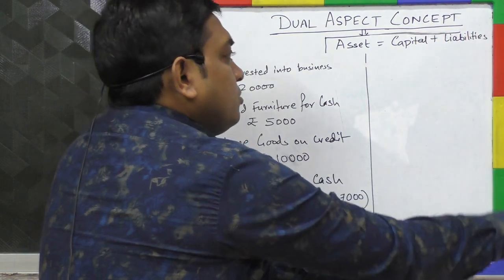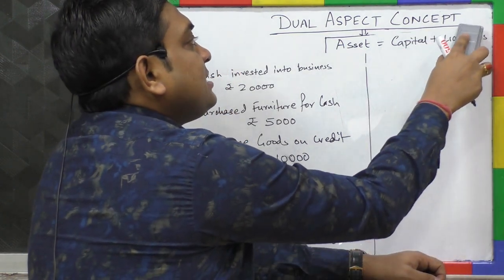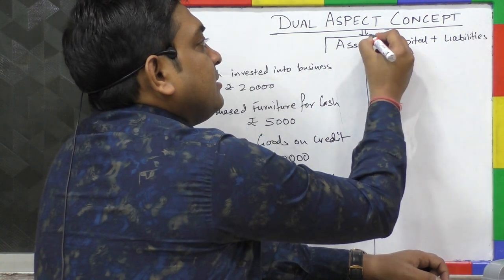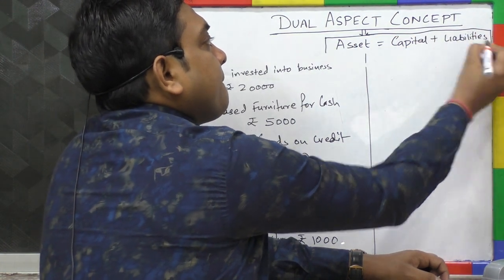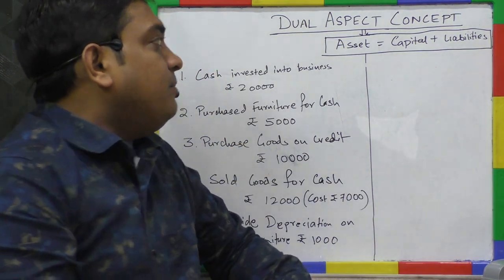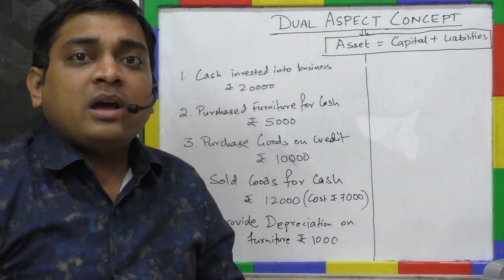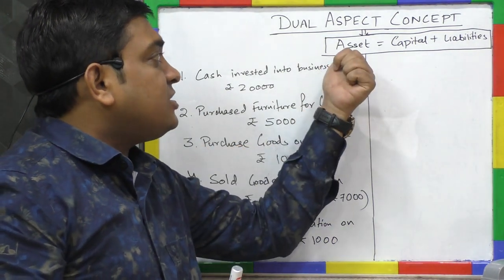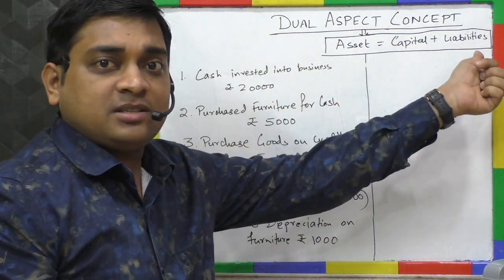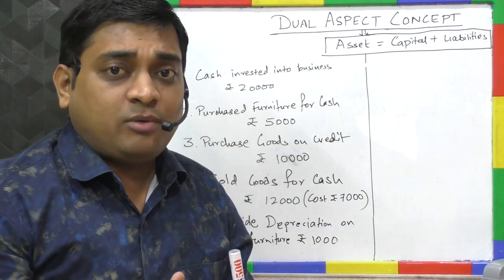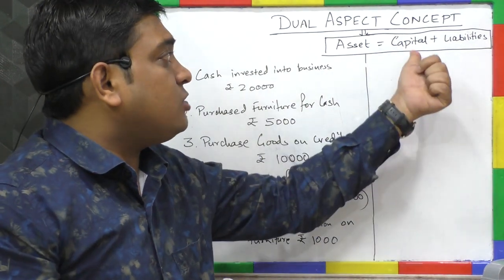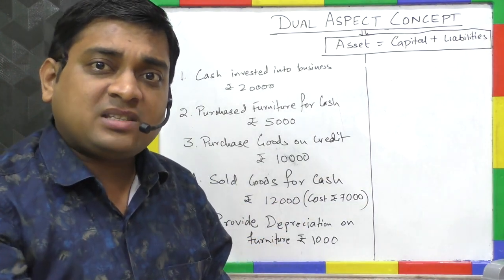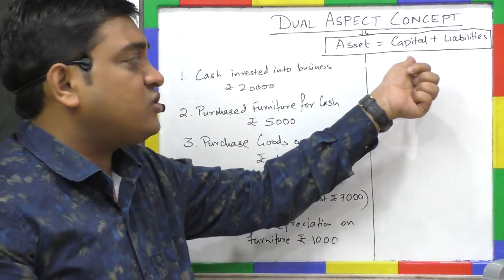Asset is equal to Capital plus Liabilities. Asset is the resource and capital plus liabilities are the sources. Whatever be the activity of the business, whatever be the transaction, this equation will always hold good.